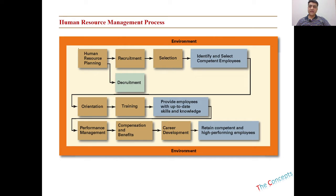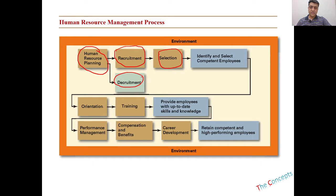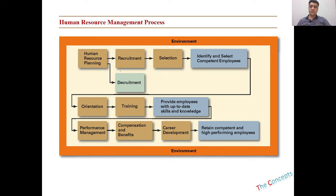First, we'll try to understand the different functions of the HRM process. This basic diagram explains almost all the functions related to HR that we'll be using in our upcoming lectures. We usually start with human resource planning, then based on that we decide about recruitment and decrutment, followed by selection, orientation, training, performance management, compensation and benefits, and career development.